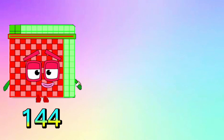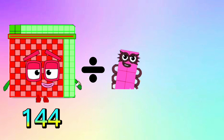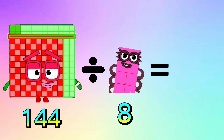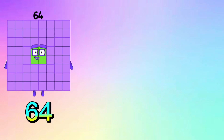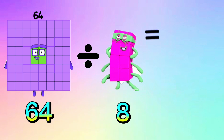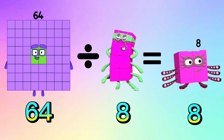144 divided by 8 is equals to 18. Repeat with me. 144 divided by 8 is equals to 18. 64 divided by 8 is equals to 8. 64 divided by 8 is equals to 8.